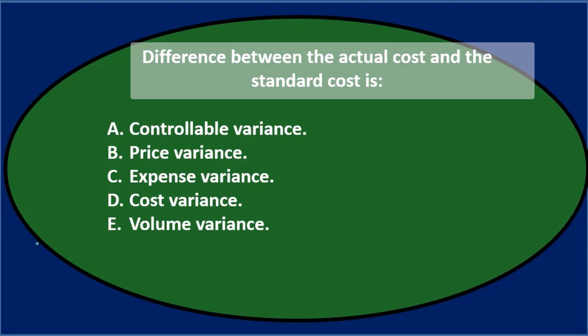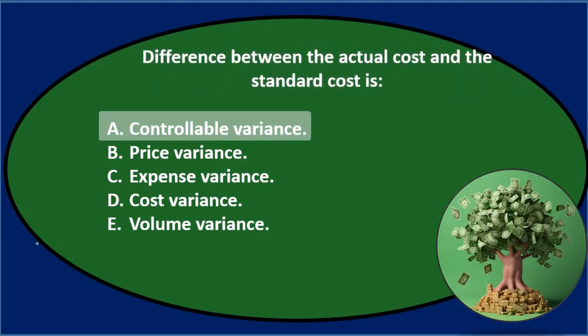Difference between the actual cost and the standard cost is either A. Controllable variance, B. Price variance, C. Expense variance, D. Cost variance, or E. Volume variance. Let's go through this again using the process of elimination.